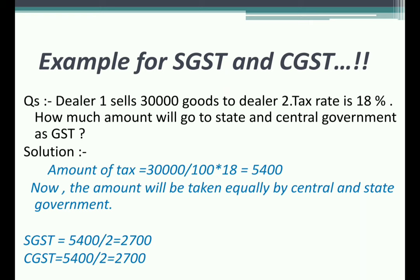First, we will calculate the total tax: 30,000 divided by 100 multiplied by 18 = ₹5,400. Now, who takes the revenue? Both the central government and state government equally share the tax amount. So we do 5,400 divided by 2, which gives ₹2,700. So ₹2,700 will go to SGST — the state government — and ₹2,700 will go to CGST — the central government.